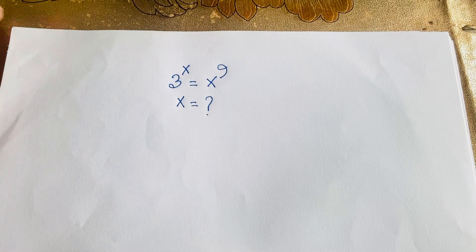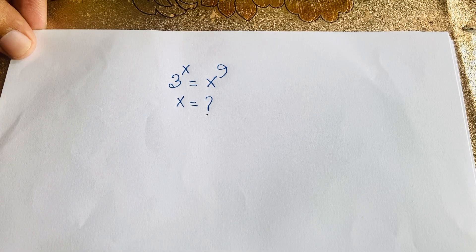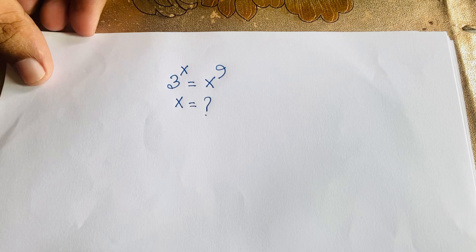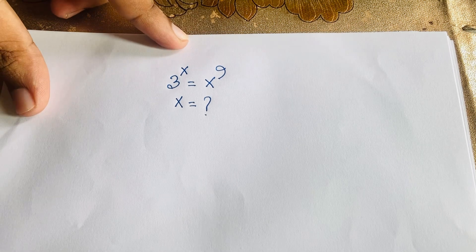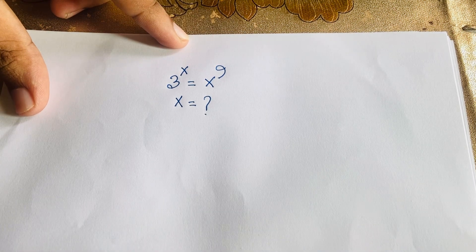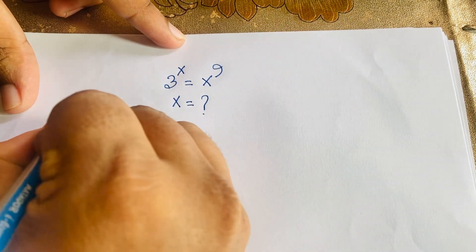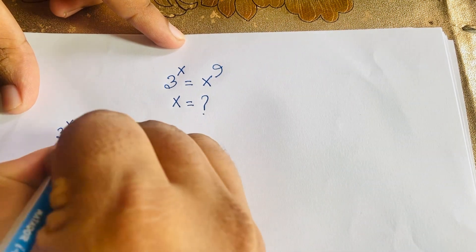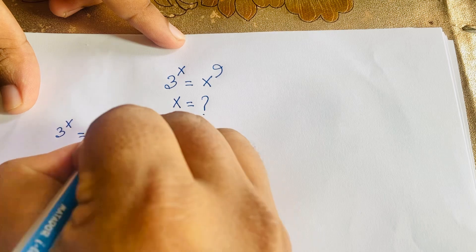Hello everyone. In this video we have solved this Italian Math Olympiad question: 3 to the power x, times x to the power 9 — what is x equal to? Our question is 3 to the power x is equal to x to the power 9.